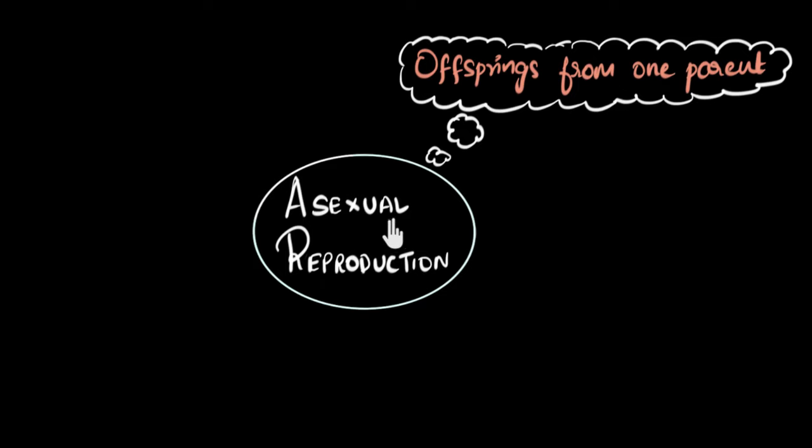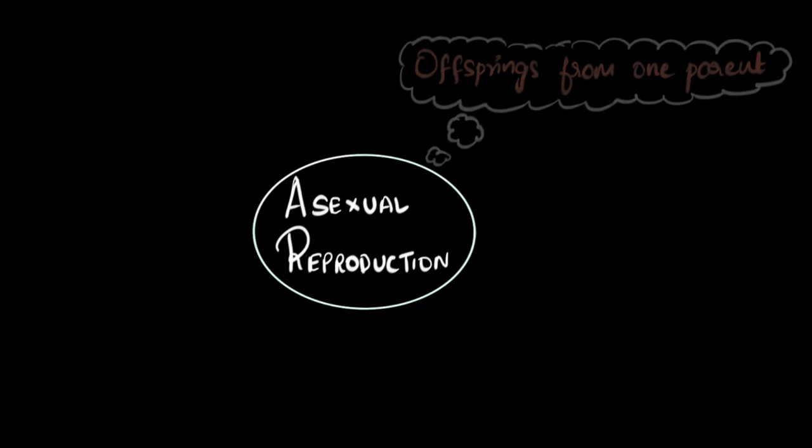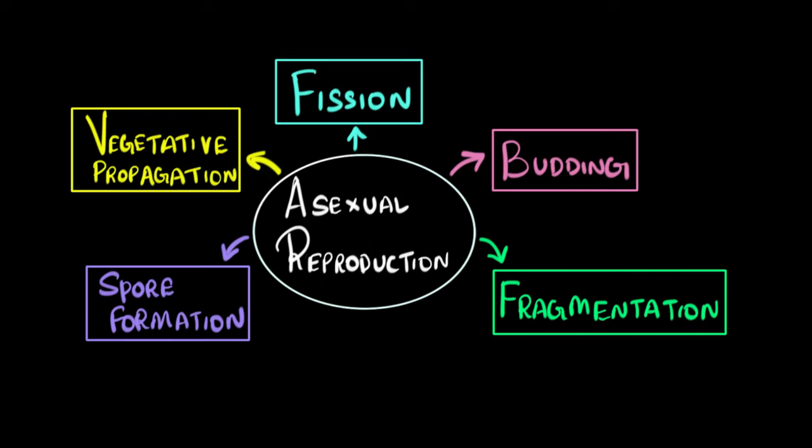A lot of animals, bacteria, and plants undergo asexual reproduction. Asexual reproduction can be broadly classified into five types. Let's not worry about their names right now because I want to talk about them in great detail, and I can't do that in one single video. So in this particular video, we will focus only on the first type called fission.